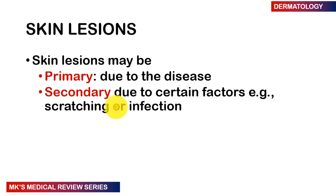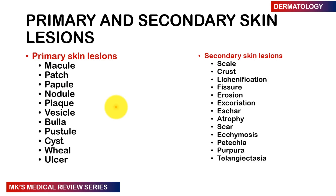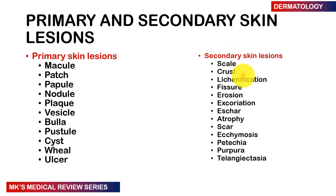Skin lesions may be primary or secondary. Primary lesions are due to the disease itself; secondary lesions are due to factors such as scratching or infections. Primary skin lesions include: macules, patches, papules, nodules, plaques, vesicles, bullae, pustules, cysts, wheals, and ulcers. Secondary skin lesions include: scales, crusts, lichenification, fissures, erosions, excoriations, eschars, atrophies, scars, ecchymosis, petechiae, purpura, and telangiectasia.